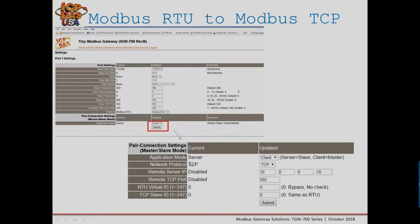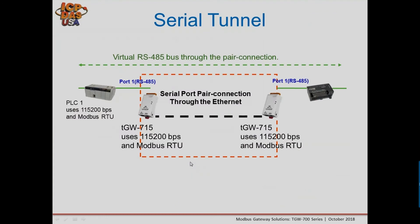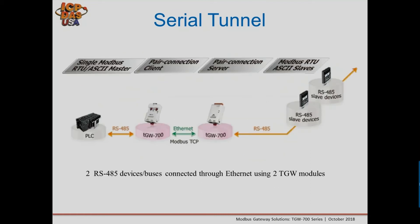The serial tunnel application connects a PLC or any RS-485 device on one end, through an Ethernet switch via two TGW modules, with data passed to the RS-485 bus on the other side. This is ideal for office buildings, large factories, or even inter-city locations. It also supports Modbus RTU ASCII protocol and allows different baud rates at each end.